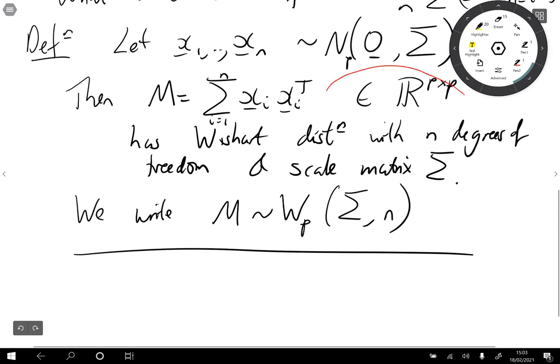So just to note, this is a distribution over matrices here. Our random samples of p by p matrices.